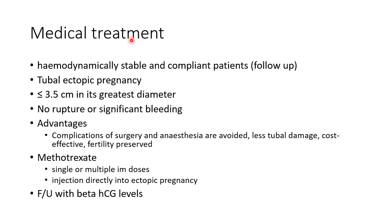Medical treatment can be given when the patient is hemodynamically stable and in compliant patients, because close follow-up is necessary. Medical treatment is preferred in tubal ectopic pregnancy when the ectopic pregnancy is less than or equal to 3.5 cm in its greatest diameter and when there is no risk of rupture or significant bleeding. The advantages include avoidance of surgical and anesthesia complications, less tubal damage, cost-effectiveness, and preservation of fertility. The drug of choice is methotrexate, given as single or multiple intramuscular doses, or as an injection directly into the ectopic pregnancy. After treatment, follow-up with beta-HCG levels is necessary to determine the prognosis.